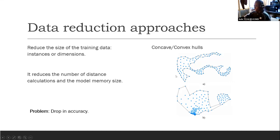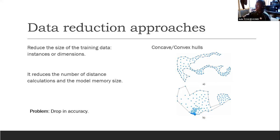One simple example of a data reduction technique is the concave and convex hull technique. The idea is that if you have a dataset with different categories, you can take one category's data points and reduce this dataset to only those edge data points. For feature dimension, we can use techniques such as PCA to reduce the number of features of the dataset. But usually, data reduction approaches lead to a drop in accuracy.